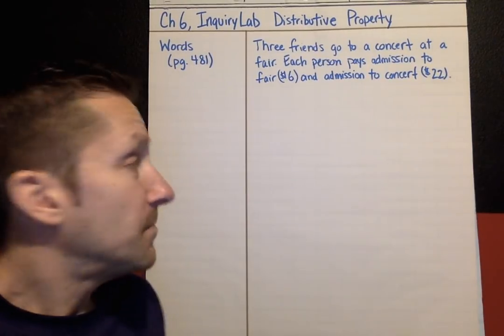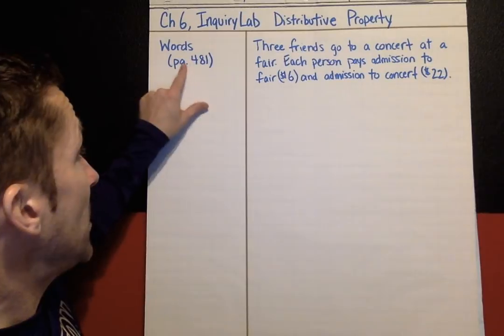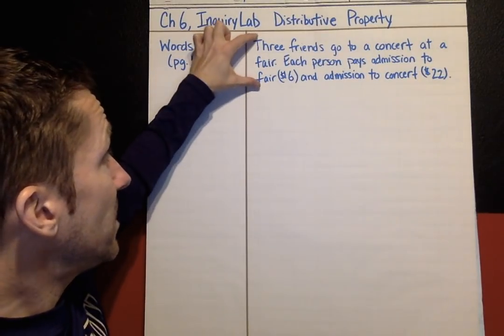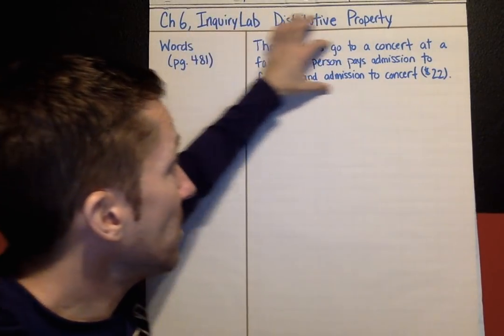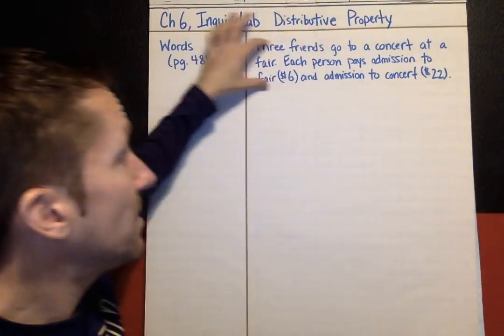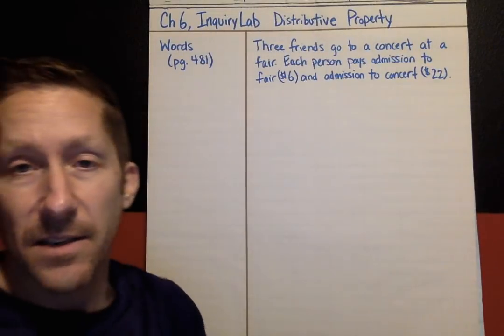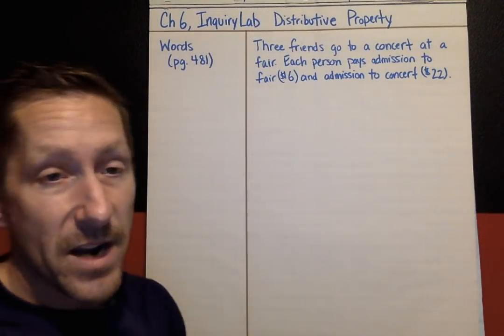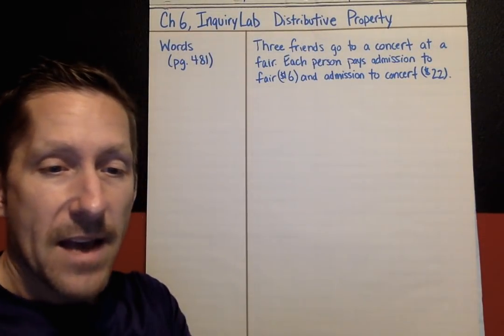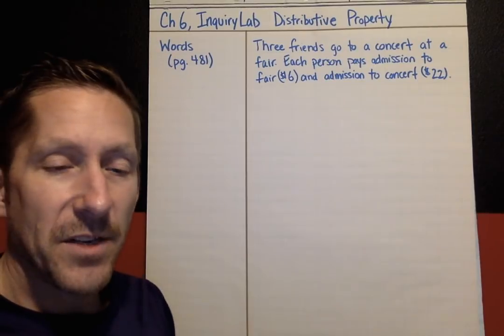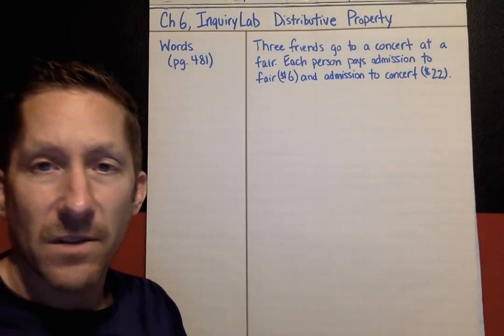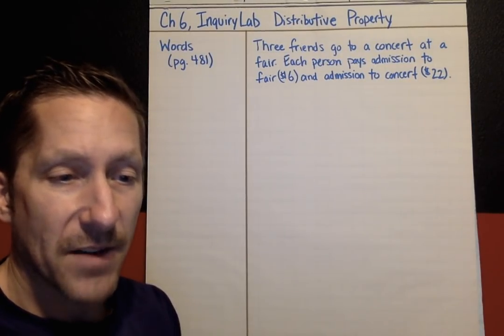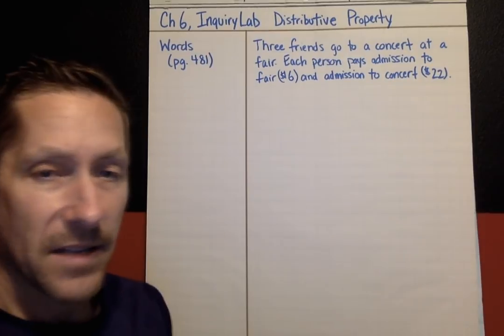In your book on page 481 is this example. You don't have to copy this down unless you want to. You can go to page 481 and the situation that we're going to look at and talk about with the distributive model is this.